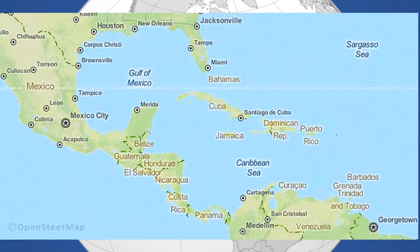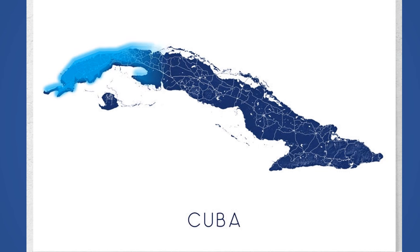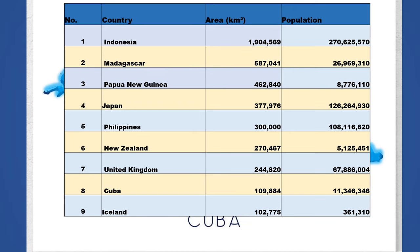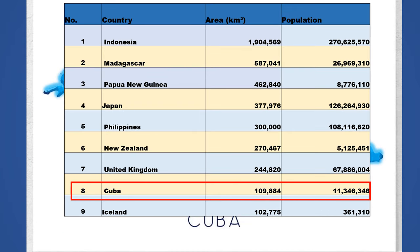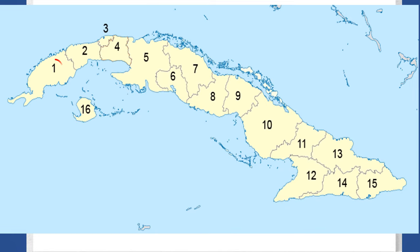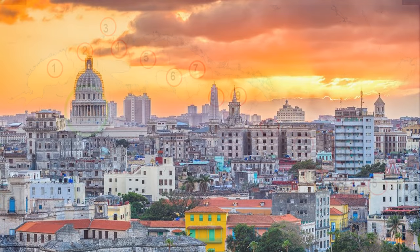Cuba lies west of the North Atlantic Ocean, east of the Gulf of Mexico and south of Florida. Cuba is the largest island in the Caribbean region and 8th largest island country in the world. It is subdivided into 15 provinces and one special municipality. The capital and the largest city is Havana.